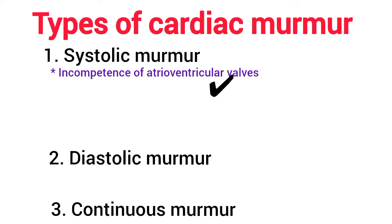Number two is stenosis of semilunar valves. During stenosis of the atrioventricular valves, the left ventricular pressure rises, causing greater turbulence in the blood flow. The vibrations of this sound can be felt as thrills by palpation over the lower neck region and the upper chest region. In severe conditions, the sound is heard even a few feet away from the affected person. It is a harsh and loud sound.